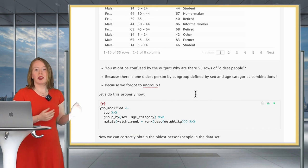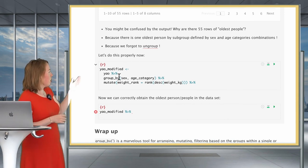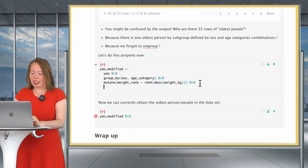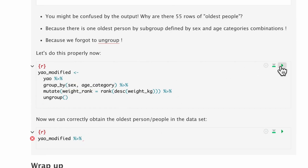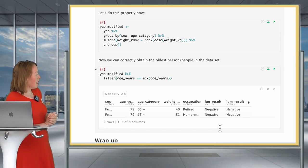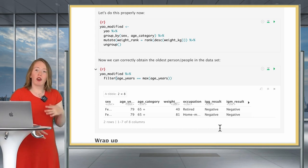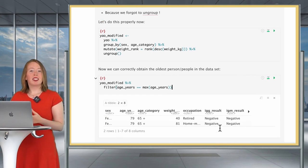So let's see. We forgot to ungroup. Now let's do this properly. So we do YOW_modified based on this definition. And then we are going to add at the end, and very important right here, ungroup(). There we go. So let's run this one. And here we do again the same thing as before. So filter(age_years == max(age_years)). And we want only the oldest person in the data set, not the oldest person per group. And this is what we get. We actually get two individuals. But this is because they are the two oldest individuals. And they are both 79 years old.